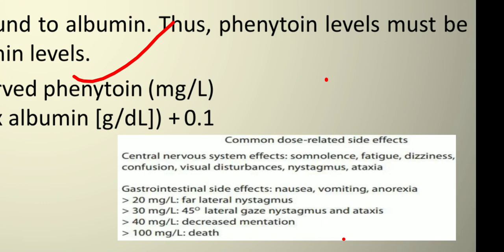If the TDM level is greater than 20 mg per liter, it causes lateral nystagmus — involuntary eye movement. If the concentration is greater than 30 mg per liter, additional toxicity occurs. If the concentration is greater than 40 mg per liter, it results in a decrease in mentation. And if it is greater than 100 mg per liter, it is potentially fatal.